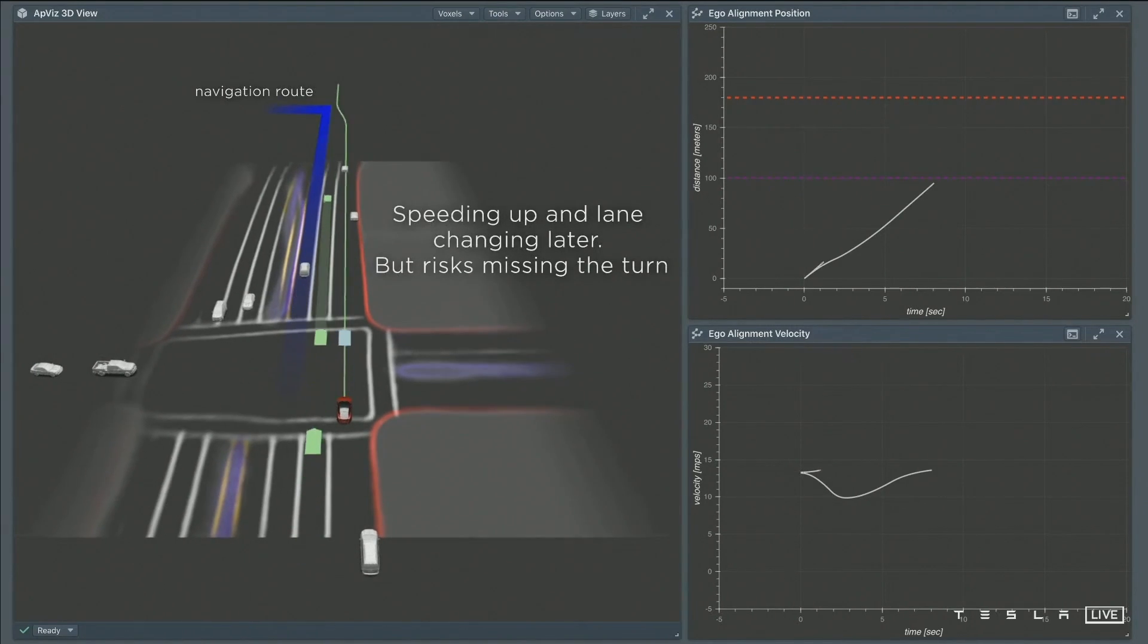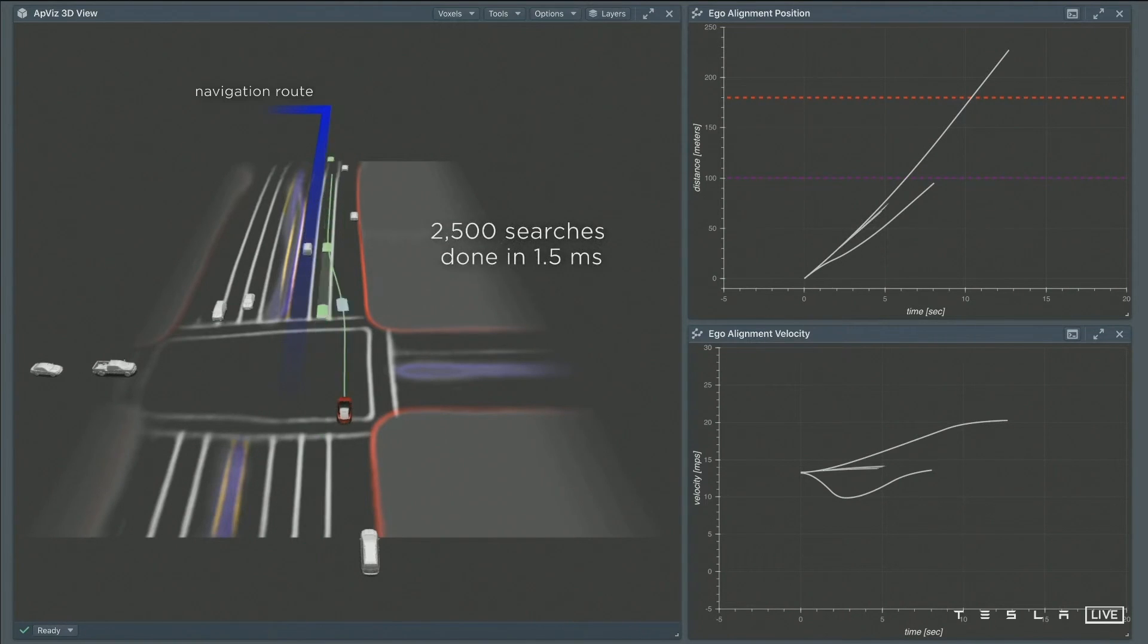The next maneuver it tries, that's the lane change a bit late, so it speeds up, goes in front of the other cars and finally does the lane change, but now it risks missing the left turn. We do thousands of such searches in a very short time span.